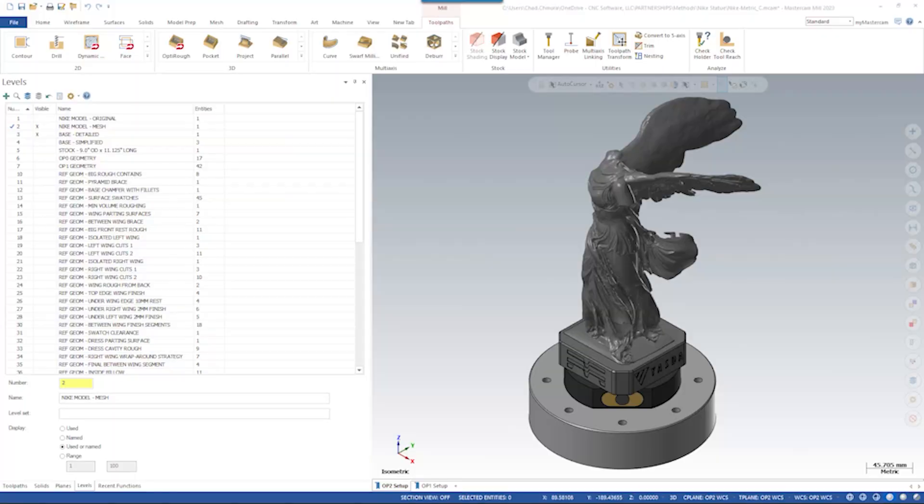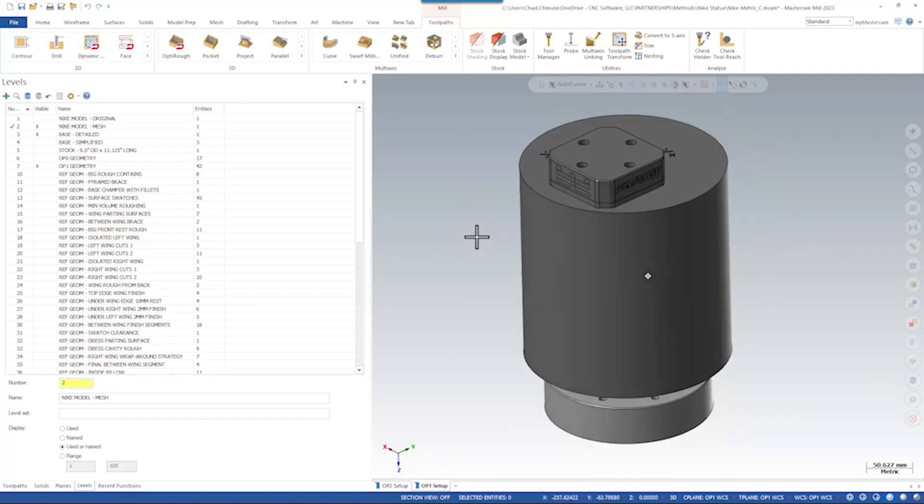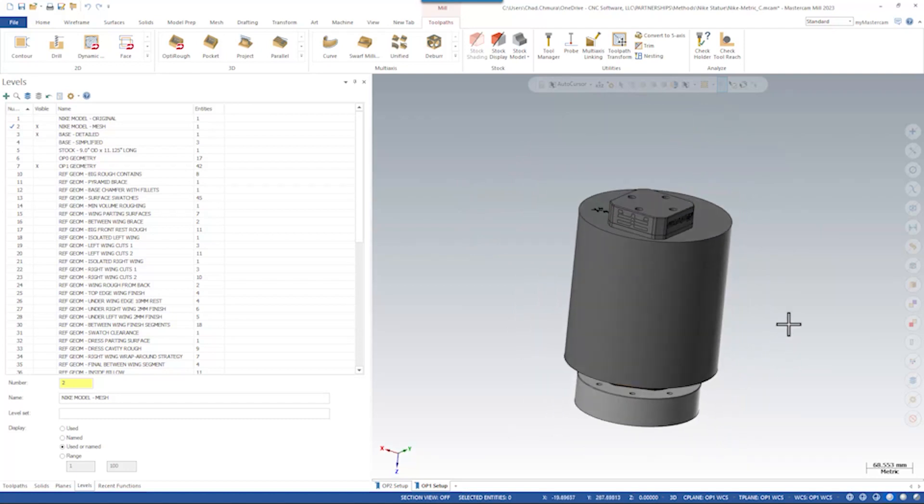This part was made in two setups. Both of those setups exist on Fifth Axis rock lock subplates. In operation number one, we basically finished the bottom of the part. We can see this is currently on a rock lock base on the pallet of the Yazda machine.